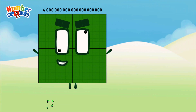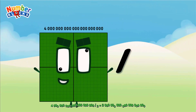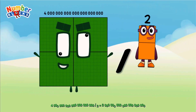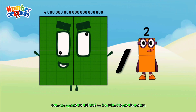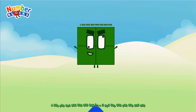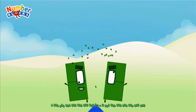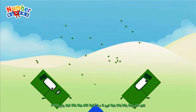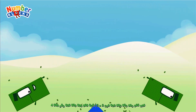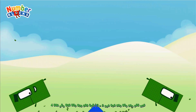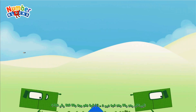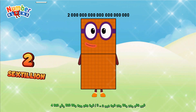Four sextillion divided by two equals two sextillion.